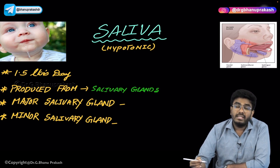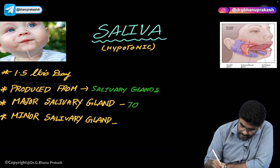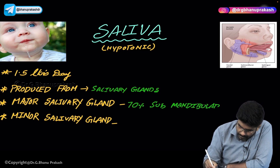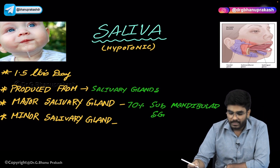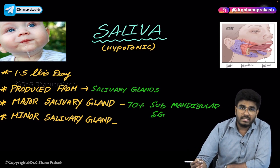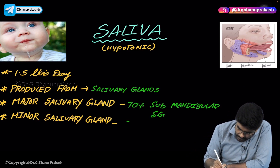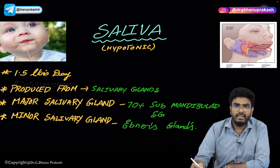Out of all three, the major salivary gland is the submandibular salivary gland. Apart from these three, there are many other salivary glands — very small in number and size. These are called Ebner's glands, which are the minor salivary glands.